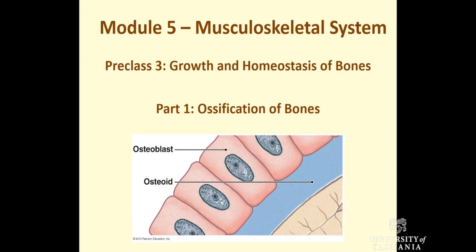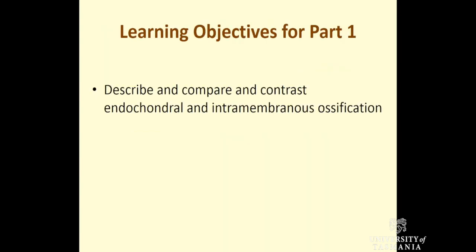Hello, and welcome to Preclass 3, where we're going to be looking at growth and homeostasis of bones. This is part of Module 5. We've already had two other preclasses: one where we introduced cartilage and bone, one where we looked at the anatomy of bones and joints, and this one is about bone growth and homeostasis. The learning objective for this part is that you should be able to describe, compare, and contrast endochondral and intramembranous ossification.